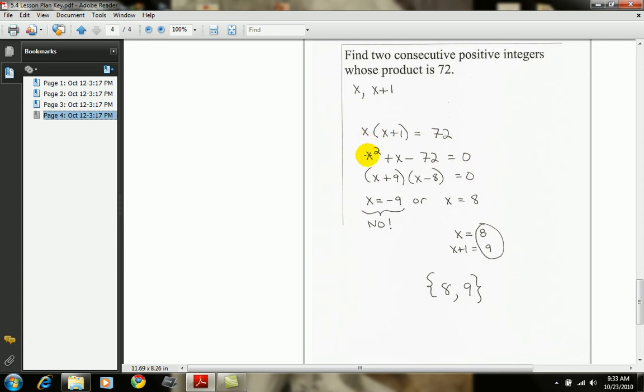So, x times x plus 1 is 72. When I distribute, I get x squared plus x. When I bring the 72 over, I get a negative 72, and this is equal 0. So, I've put this quadratic equation in standard form. When I factor this expression, it factors as x plus 9 times x minus 8.